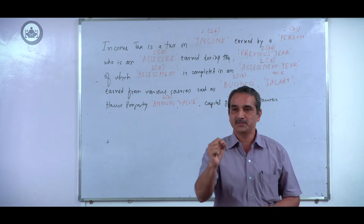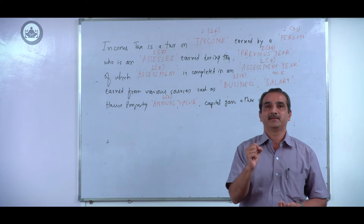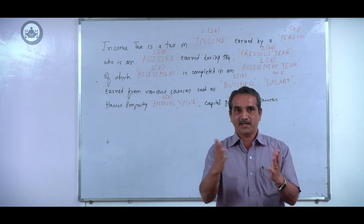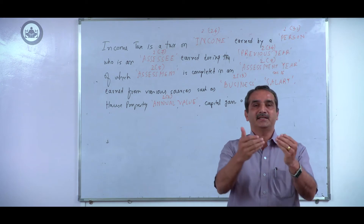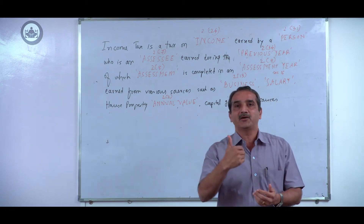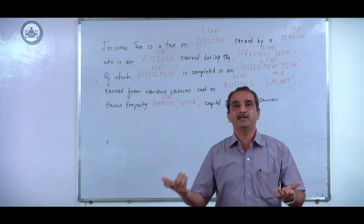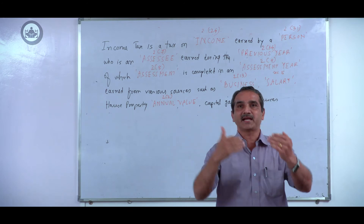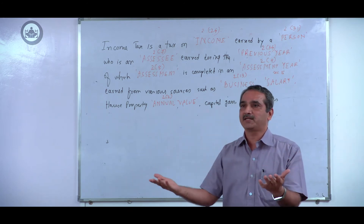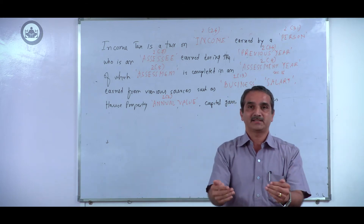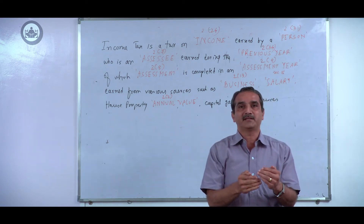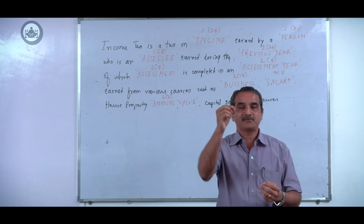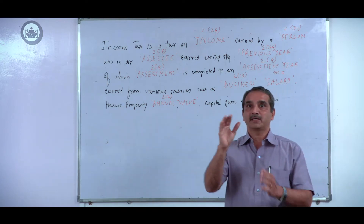The inclusive definition will include certain amounts not normally called income. For example, normal income implies periodical returns. But sometimes returns may not be periodical. If an employee retires and receives gratuity, that is a one-time capital receipt — not periodical. But under the inclusive definition of income, it is brought within the scope of the term income. This is one of the finest examples of a capital receipt.